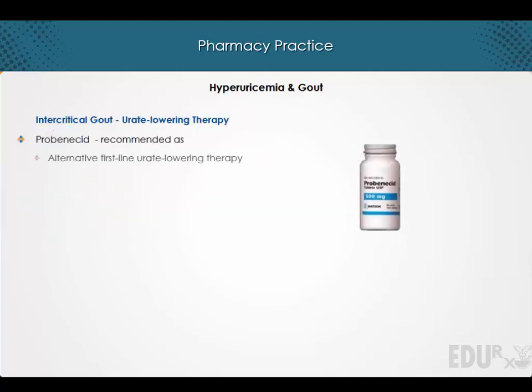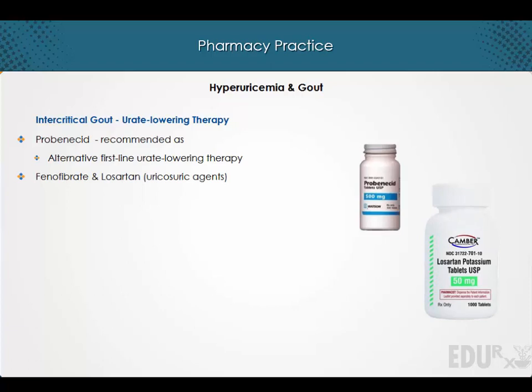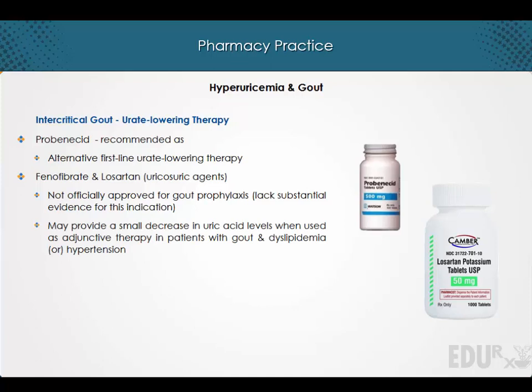Probenecid is recommended as an alternative first-line urate-lowering therapy. Other uricosuric agents that can be used include phenofibrate and losartan. It should be noted that phenofibrate and losartan are not officially approved for gout and lack substantial evidence for this indication. Preliminary evidence suggests that either may provide a small decrease in uric acid levels when used as adjunctive therapy in patients with gout and dyslipidemia or hypertension.